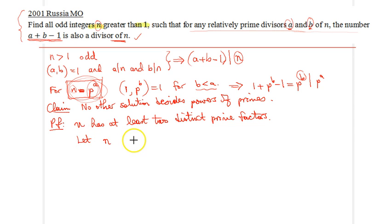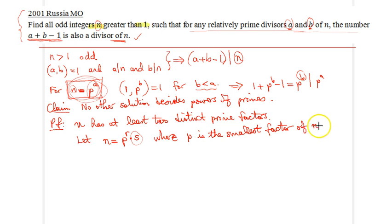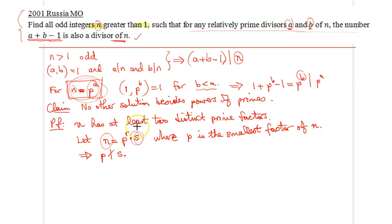Let's represent n in the following fashion: let n equal p^r times s, where s is essentially everything else — all the other prime divisors of n. Obviously, we decided that p is the smallest prime factor of n, and by this definition, p does not divide s. So p does not divide s; p divides n, but it does not divide s.